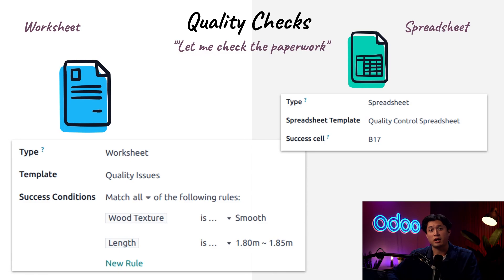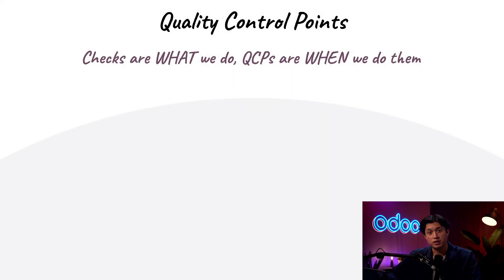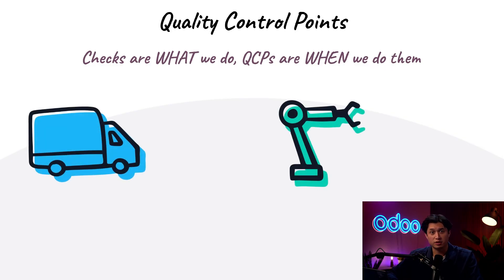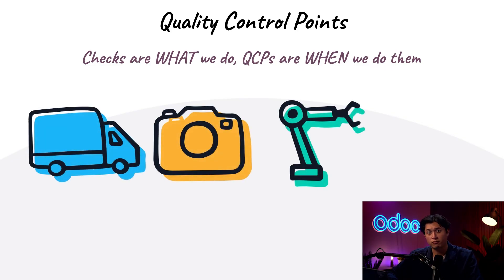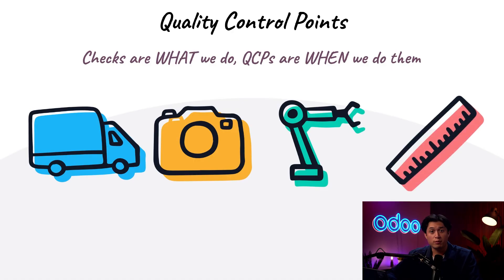Now that we've covered the check types, let's talk about how we incorporate them into our workflow. This is where quality control points, or QCPs, come in. QCPs are checkpoints where a quality check is triggered, and they help standardize quality practices by ensuring checks are performed at regular intervals. For example, we may configure a take-a-picture check when receiving items into the warehouse, then perform a measurement check during manufacturing to confirm product dimensions are correct. It's important to note that if a QCP is not configured, the quality check will not automatically be triggered.